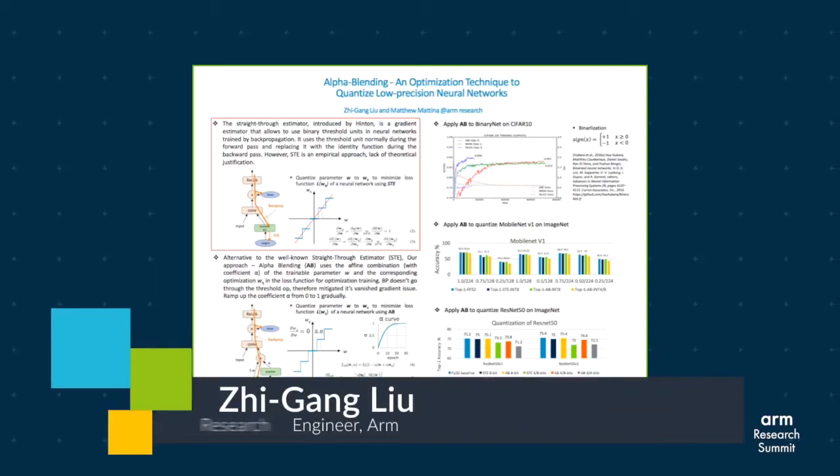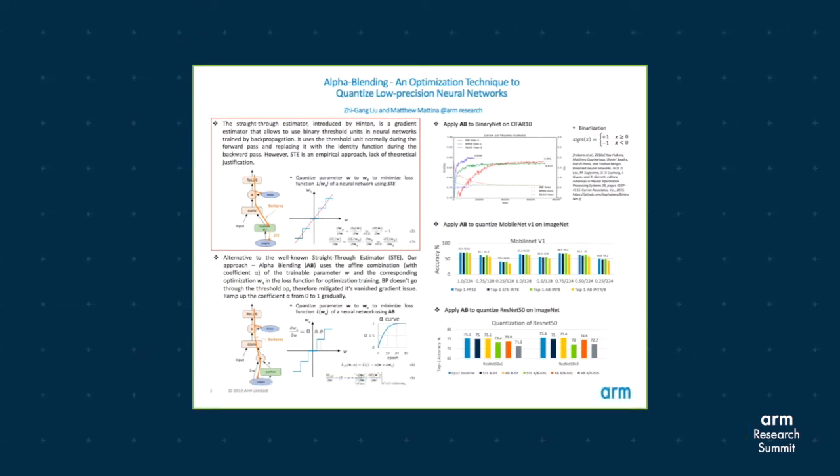The straight-through estimator, or STE, is widely applied to approximate the gradient of the threshold function used in network optimization, such as quantization or pruning.